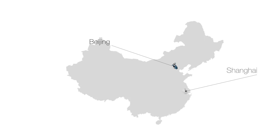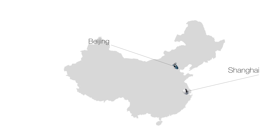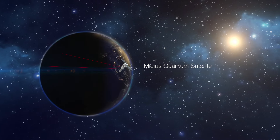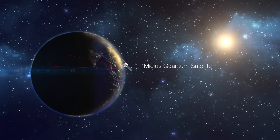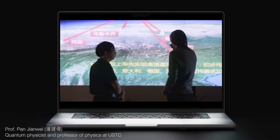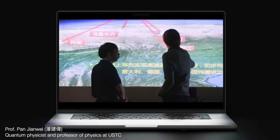Did you know that China has built a quantum network between Beijing and Shanghai? It is the world's first quantum communication network that combines over 700 optical fibers on the ground with two ground-to-quantum satellite links to achieve quantum key distribution over a total distance of over 4,500 kilometers.